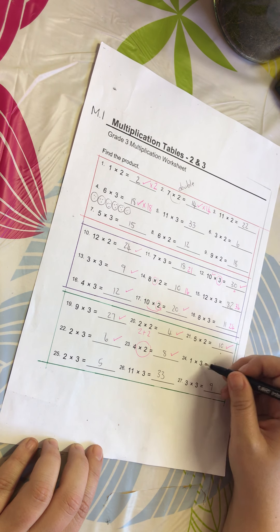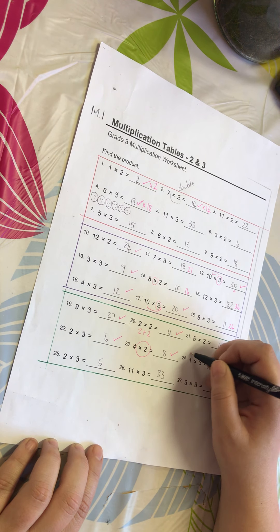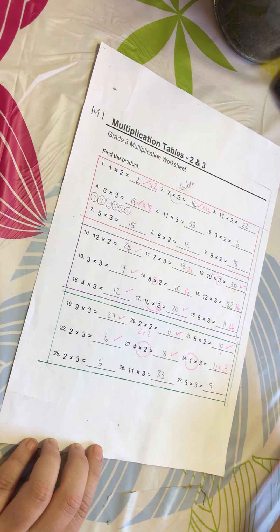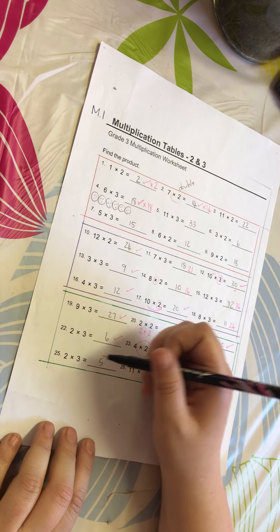Number 24: 1 times 3 is not 4, it's 3. Anything that is timesed with 1 stays exactly the same because it means I have one group of 3. How many do I have? I have 3. Number 25: 2 times 3, we had it literally up here, 6.